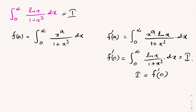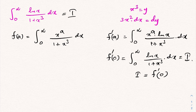To evaluate f(a), I am going to take a substitution: x cubed equals y. Then if we differentiate, 3 times x squared dx equals dy. We should also change the boundaries — the upper and lower limits — and the boundary is still the same, from 0 to infinity.